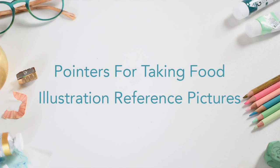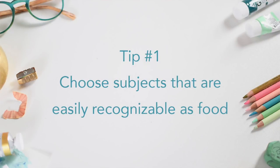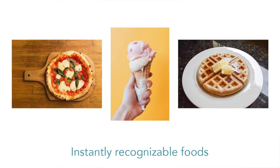Now, a few pointers specifically geared towards reference photography for food illustration or food paintings. We have five basic tips. The first one is to be sure to choose subjects that actually look like food, or that are immediately recognizable as food. Think of things like a Danish pastry, ramen, tacos, or a lollipop — something that people are going to see and immediately be able to read as food.